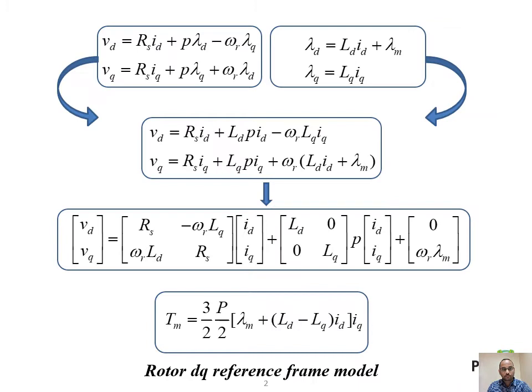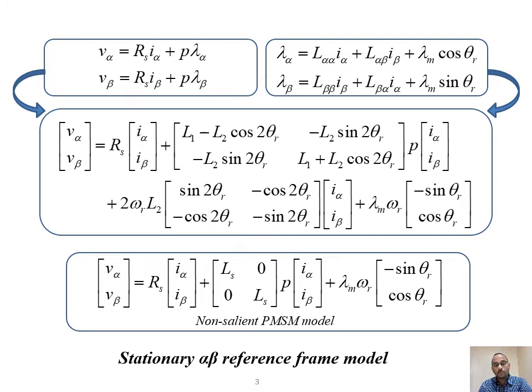The PMSM can be modeled in the rotor reference frame for control purposes, wherein all the variables become DC and it is easy to design the controller. For developing equations for the observer, it is better to use the alpha-beta reference frame where the output equation becomes a linear model. In the DQ reference frame, the output equation is a nonlinear model, so we use the alpha-beta reference frame for developing the stochastic observers.